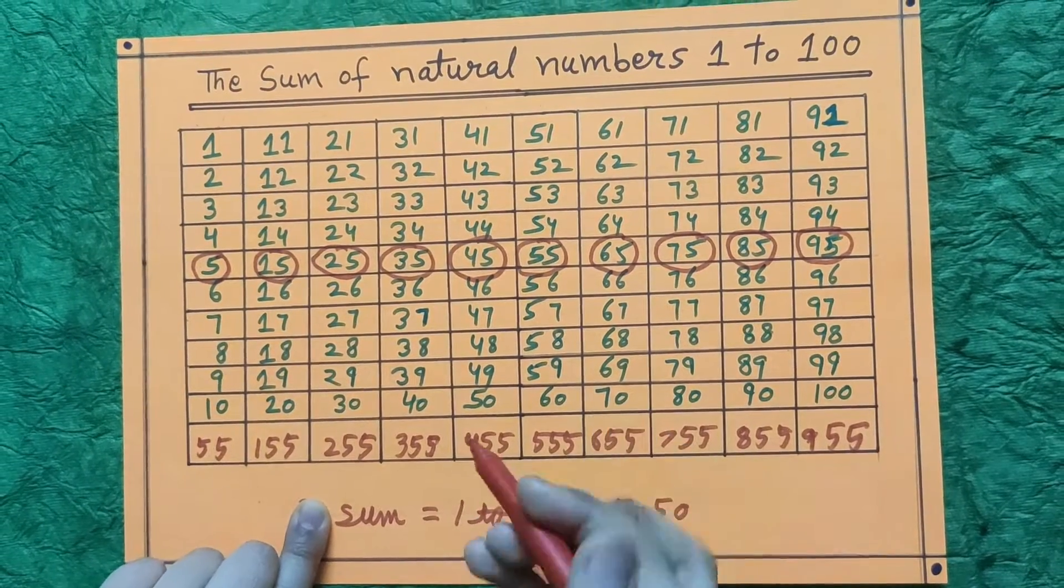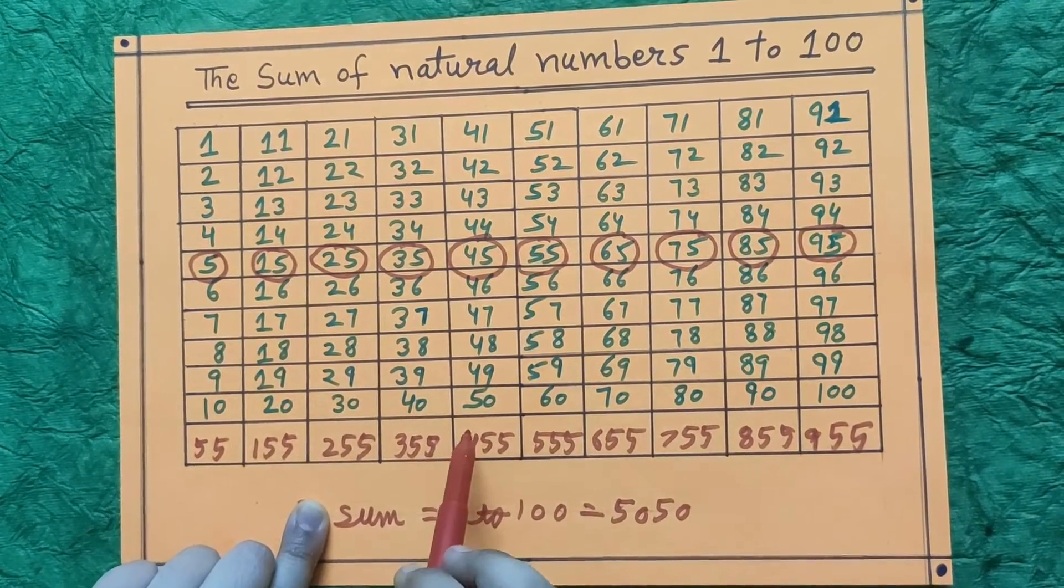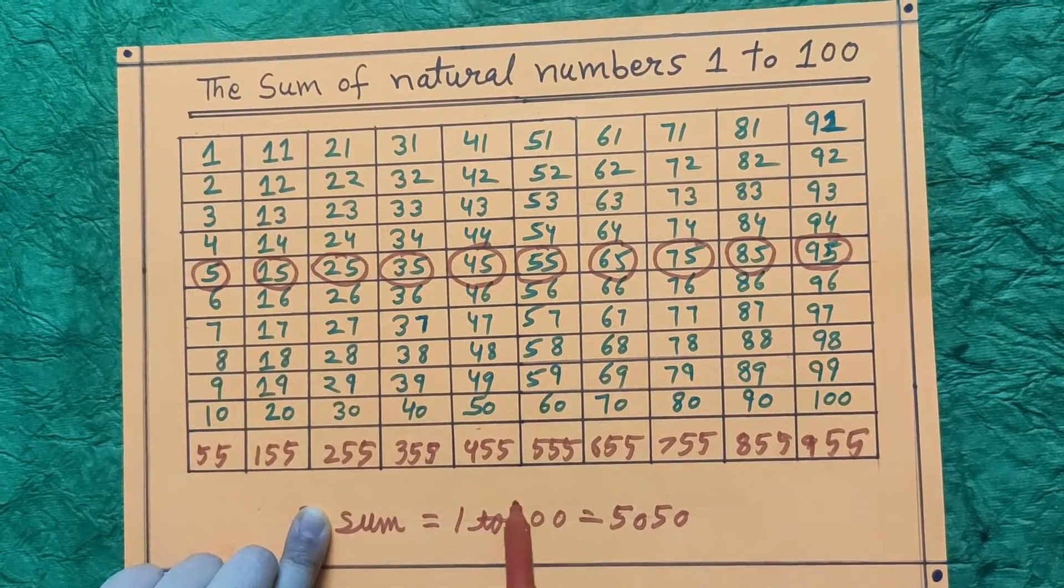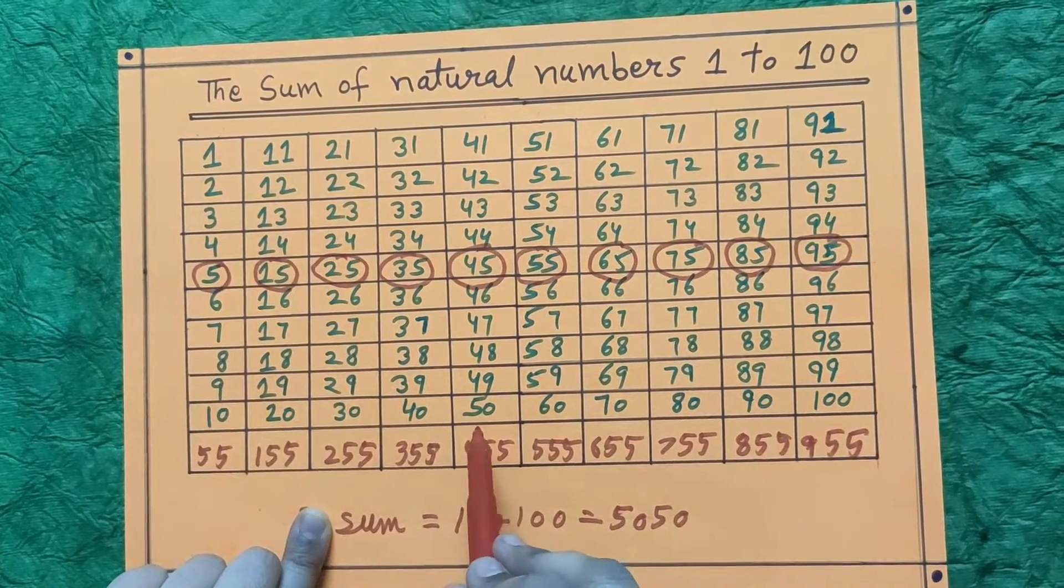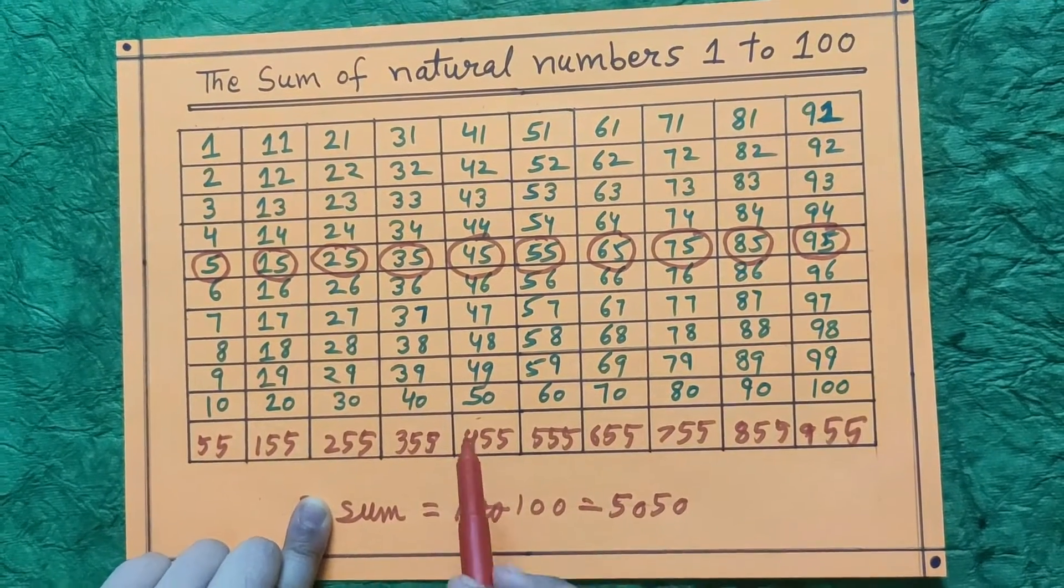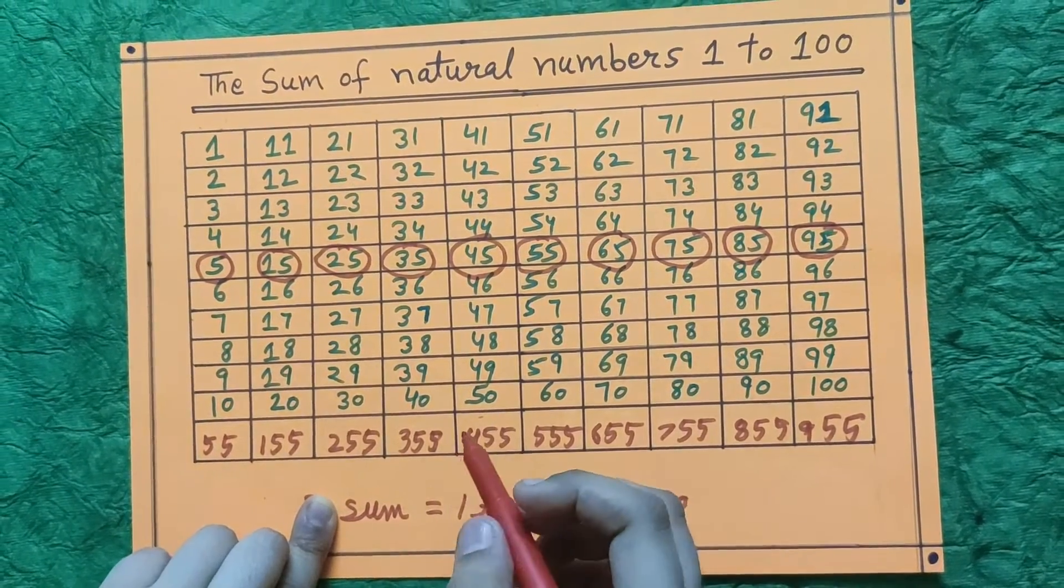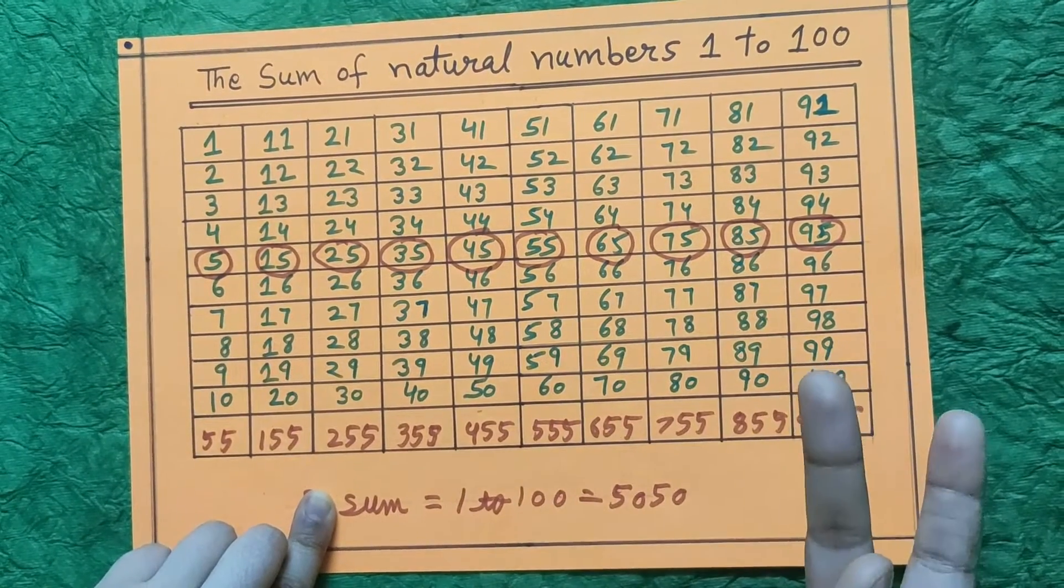And now I am going to tell you the second trick. The second trick is the center of 100 will be 50, so we will write 50 two times and we have got the answer.